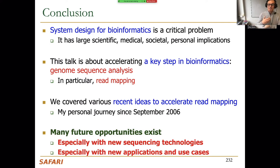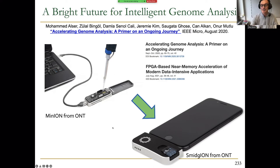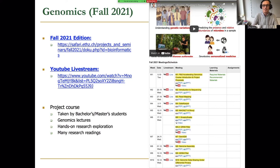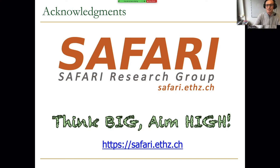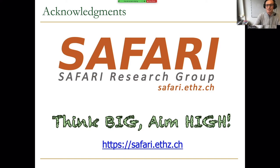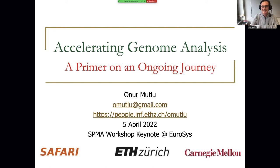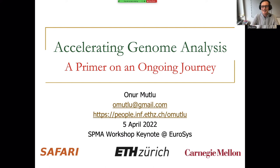We covered recent ideas in accelerating readmapping — a very small but important fraction of genome sequence analysis. I believe many future opportunities exist. We need to think across the stack more broadly for both new sequencing technologies and new application use cases. The future I see is much more edge-oriented, with much more computation in devices that are much more powerful and intelligent. We have courses covering processing in memory and genomics. I'll acknowledge the funding and my group who has done this work collaboratively with our collaborators. All papers, talks, and artifacts are available online. I'm happy to take any questions.